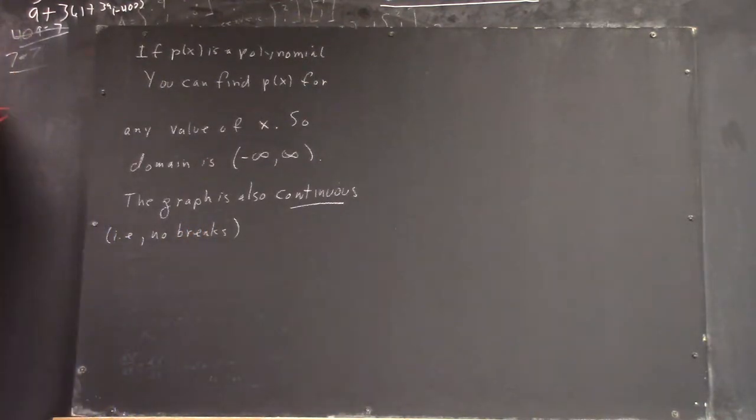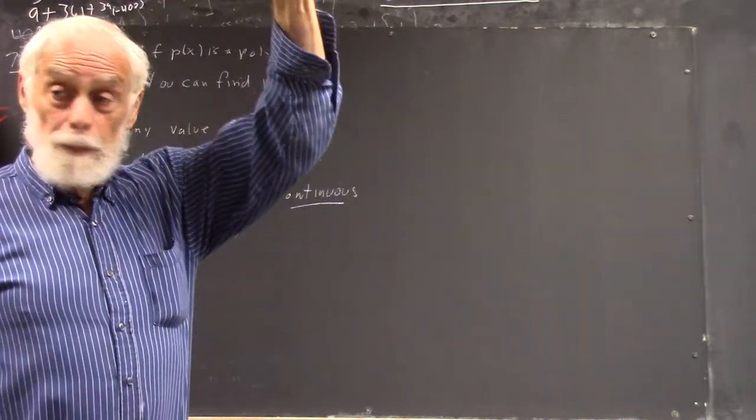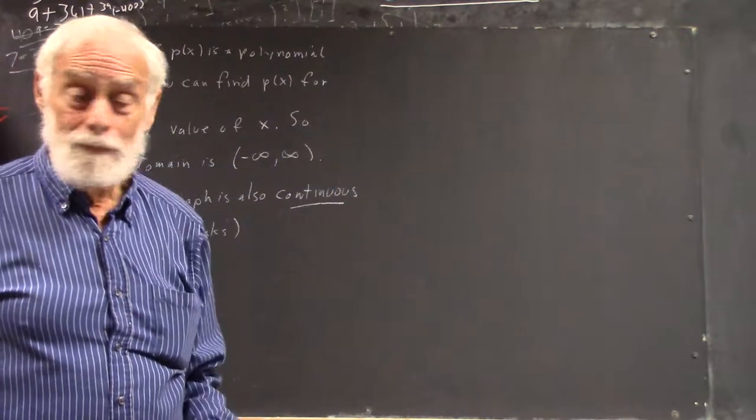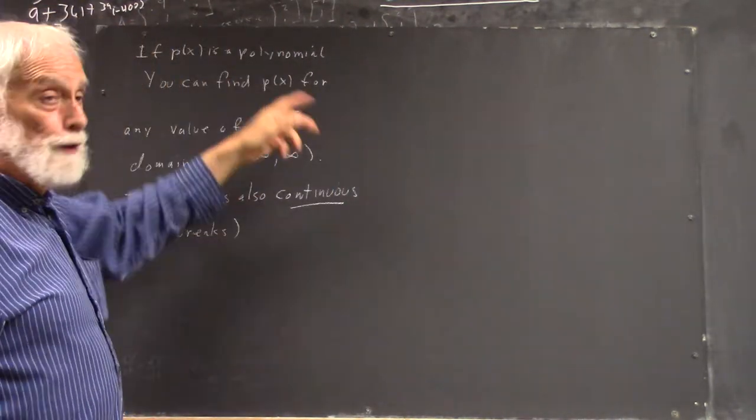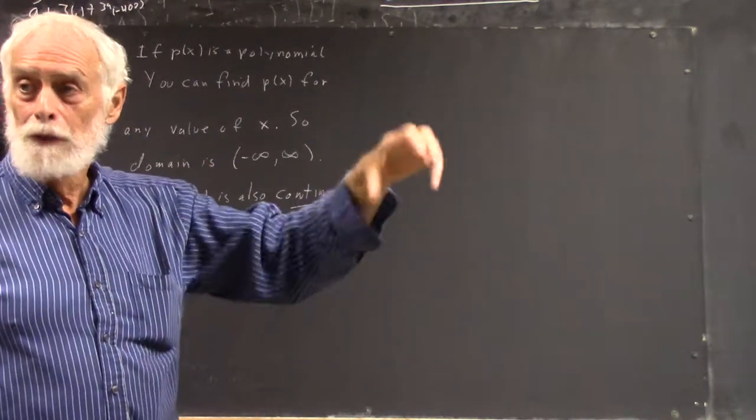The graph is also continuous. There are no breaks. The graph doesn't do this and then suddenly jump up to here with no numbers in between. That's just because if you put a number close to x in, you get a number close to whatever p(x) was.